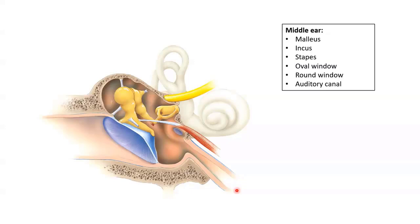If pressure cannot equalise, it can cause intense pain, hearing impairment, ringing in the ears, and also vertigo. The auditory canal is particularly prone to infections given its close proximity to the nasopharynx, and particularly in children whose auditory canal is quite short.